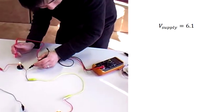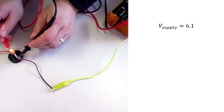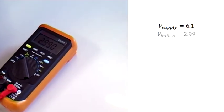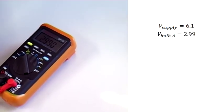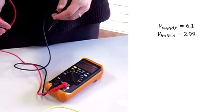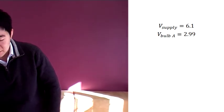So let's do this first light bulb here. Just connect it like that, and I get a reading of 2.99 volts across this light bulb. So what I've done there is I've measured the voltage drop across this light bulb.